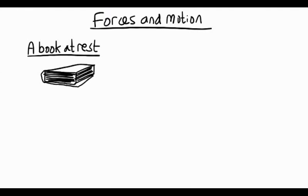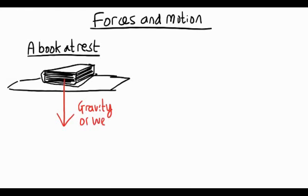So here's our book, and here's our table. And we know that the book has weight, it weighs something, and the weight is a force of gravity pulling it down. There must be an equal and opposite force called the support force pushing it back up. And that's because the forces must be balanced.